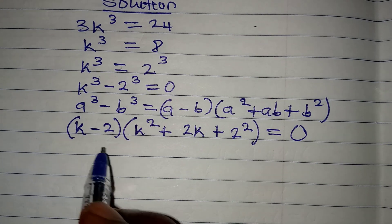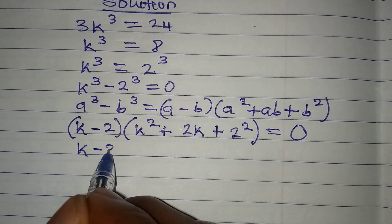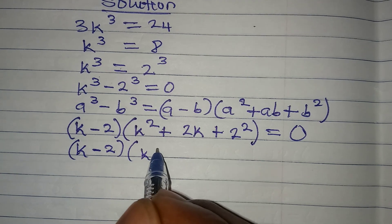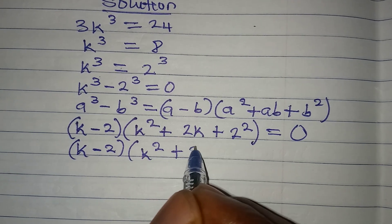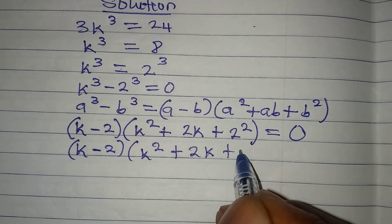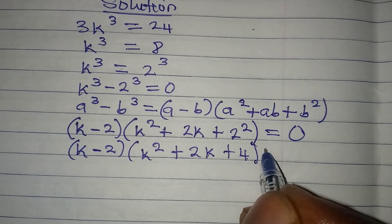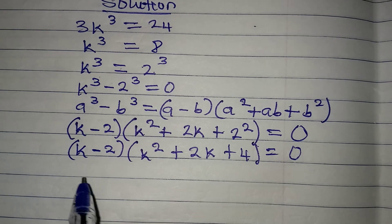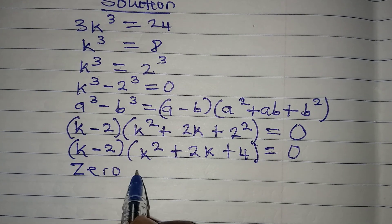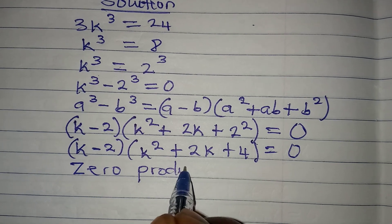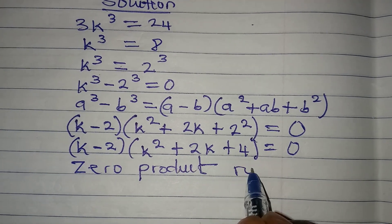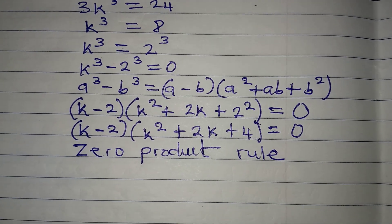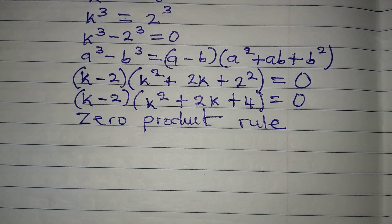To continue with this, k - 2 here. And then here we have k² + 2k + 4. This is equal to 0. Now what do we do? Apply our zero product rule. Let us apply our zero product rule.